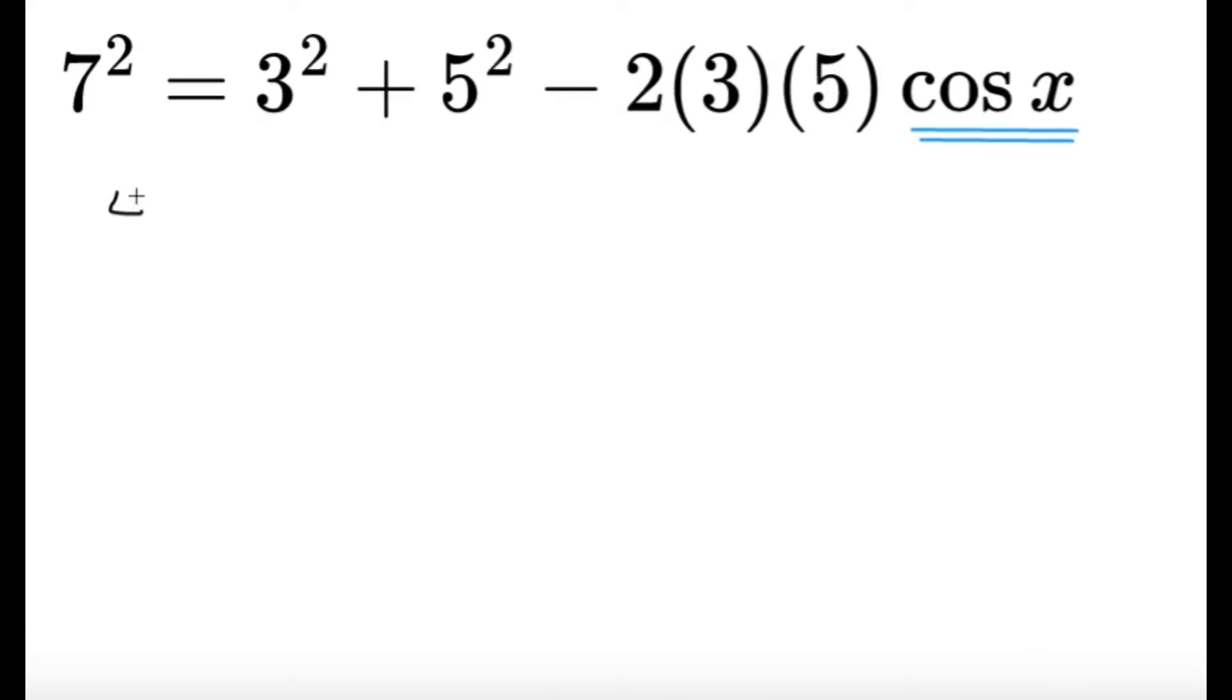So 7 squared becomes 49. 3 squared is 9. 5 squared is 25. 2 times 3 times 5, well, 2 times 3 is 6. 6 times 5 is 30. So 30 cosine x.